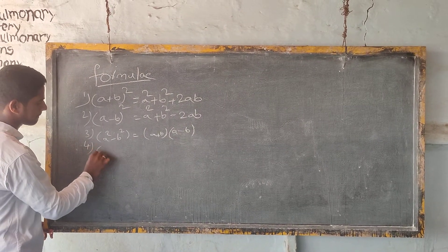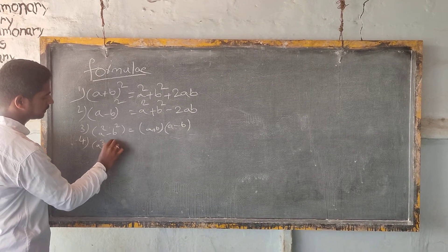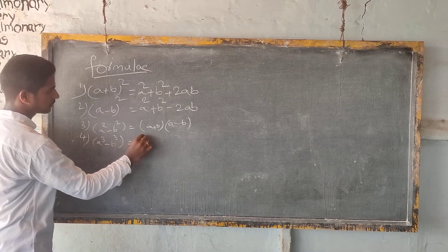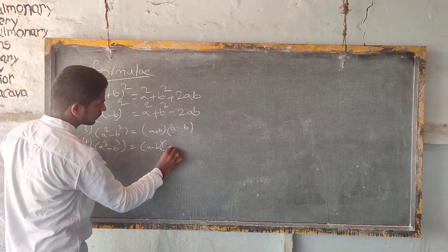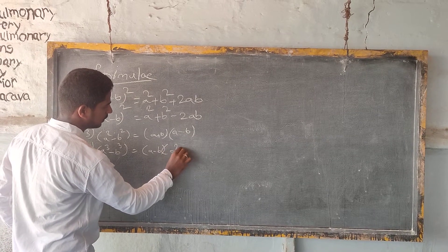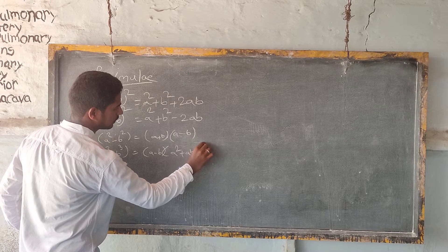Fourth one, A cubed minus B cubed is equal to A minus B equal to A squared plus AB plus B squared.